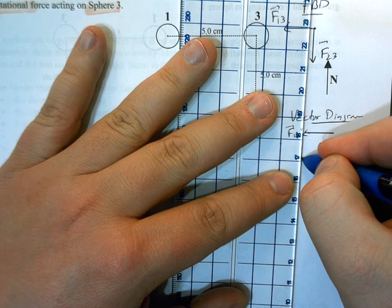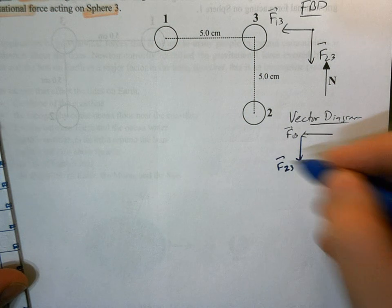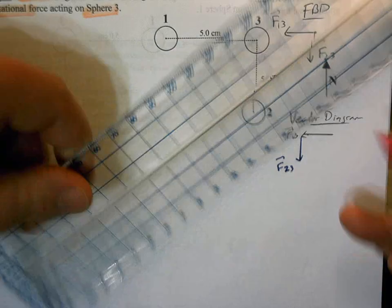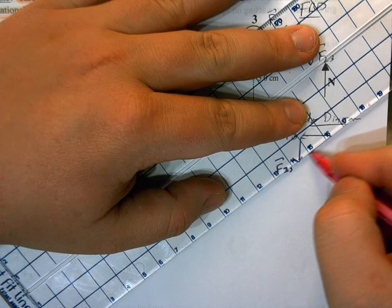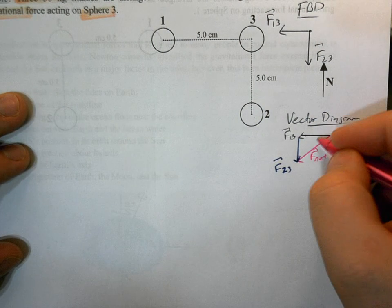And then we have this force 2, 3 going south, which is going to tell us that our net gravitational force is acting along this line here.